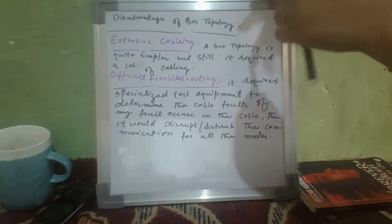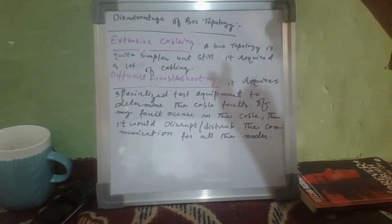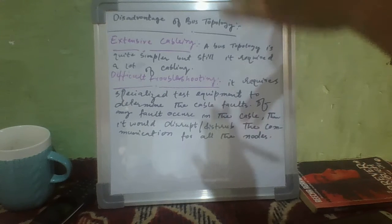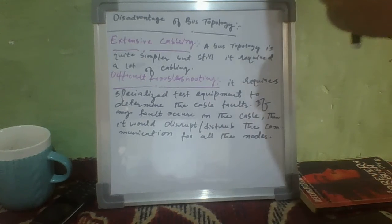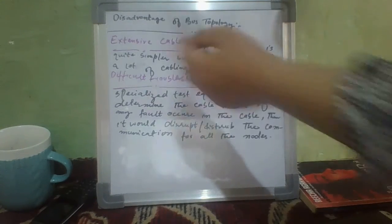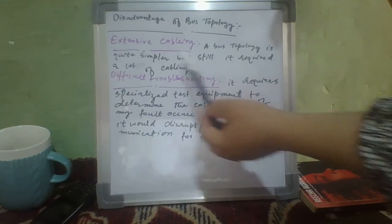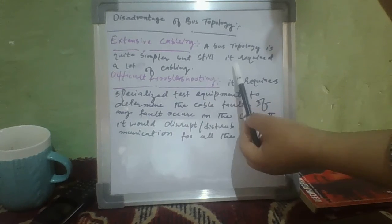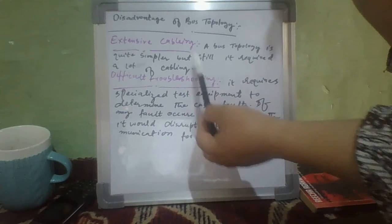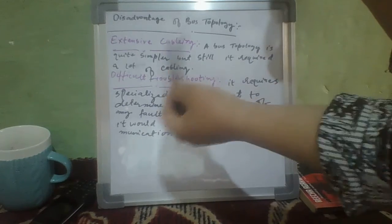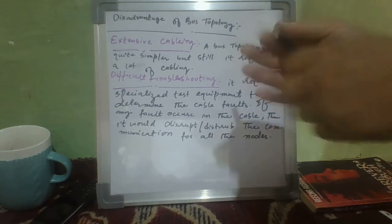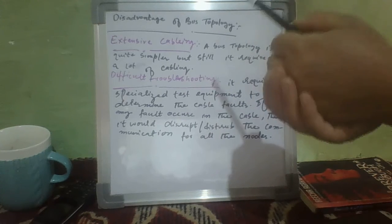Extensive Cabling means that when we create Bus Topology, its configuration is very easy and simple, but when we create or configure it, it requires a lot of cabling. So this disadvantage is called Extensive Cabling. Bus Topology is quite simple, but still it requires lots of cabling. When we extend the nodes, it again results in a lot of cabling.